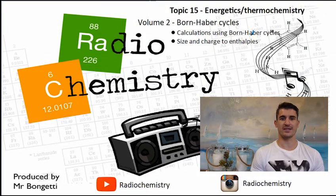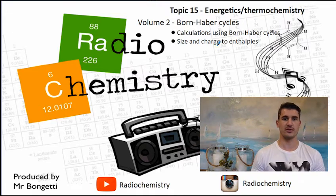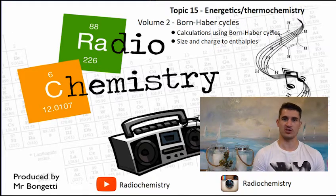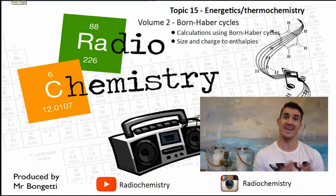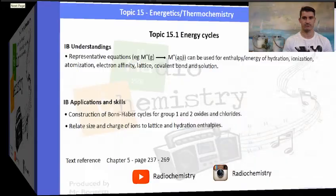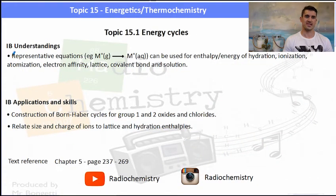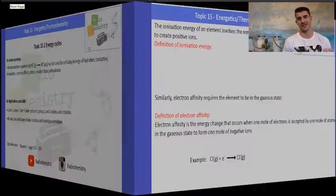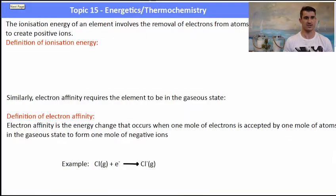Volume two, Born-Haber Cycles. We look at calculations using Born-Haber Cycles and we have a quick discussion about size and charge on the enthalpies of the lattice. So IB understandings is we need to use equations to represent different parts of the Born-Haber Cycle. We need to be able to construct a Born-Haber Cycle and then relate the size and charge to the lattice enthalpies.